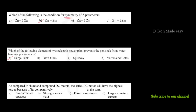As compared to shunt and compound DC motors, the series DC motor will have the highest torque because of its comparatively higher current at the start. For a DC series motor, torque is directly proportional to Ia squared. This proportionality to the square of the armature current gives it the highest torque.